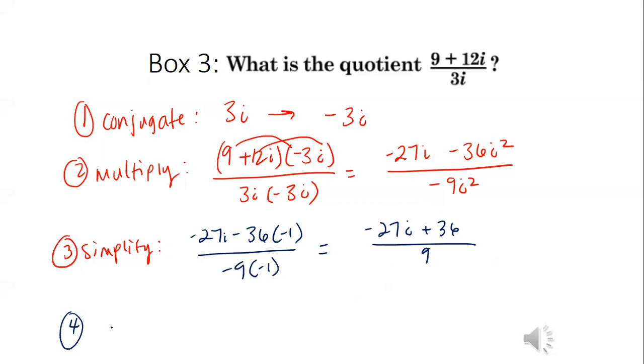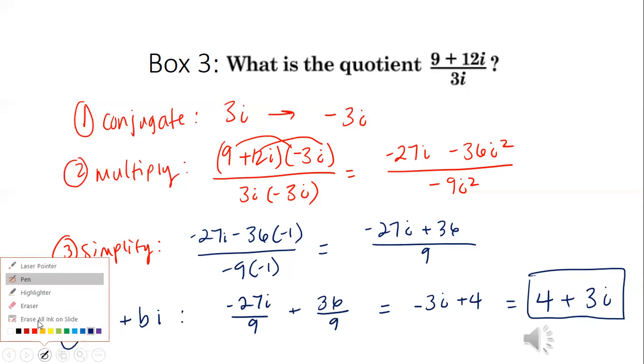And then step four, we're going to put it in complex number form, which is A plus Bi form. So that means we're separating these into two separate fractions. So we have negative 27i over 9 plus 36 over 9. And I can simplify here and that gives me negative 3i plus 4, which equals 4 minus 3i. And it's in mathematical exact form.